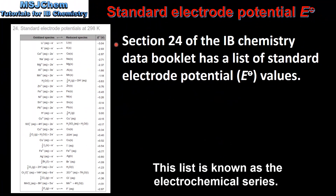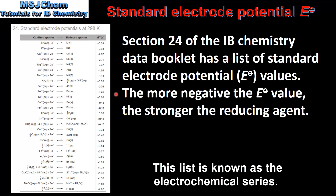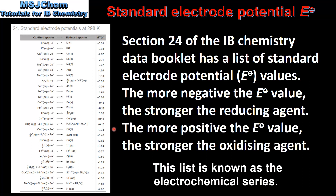Section 24 of the IB Chemistry Data Booklet has a list of standard electrode potential values. The more negative the electrode potential value, the stronger the reducing agent. Half cells at the top of the table have more negative values, meaning they are stronger reducing agents and more likely to undergo oxidation. The more positive the electrode potential value, the stronger the oxidizing agent. Half cells at the bottom of the table have more positive values, meaning they are stronger oxidizing agents and more likely to undergo reduction.